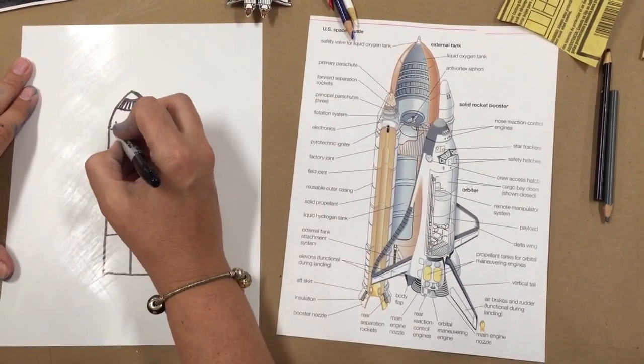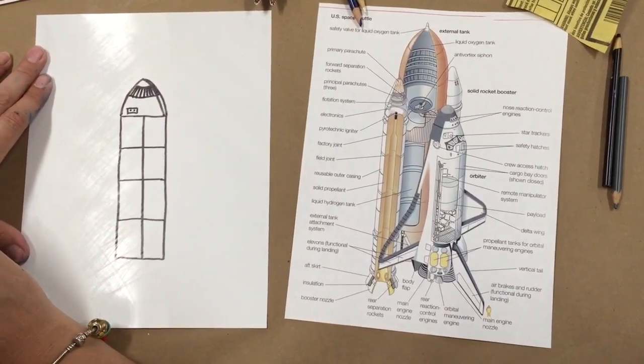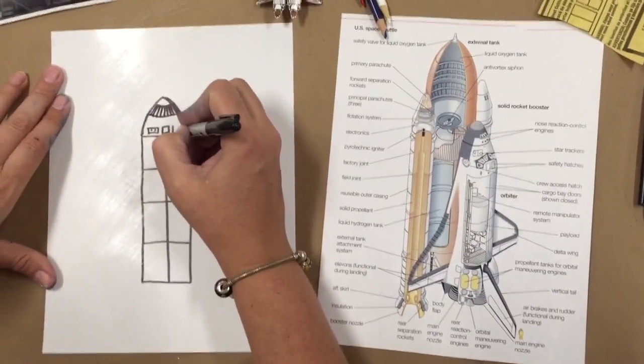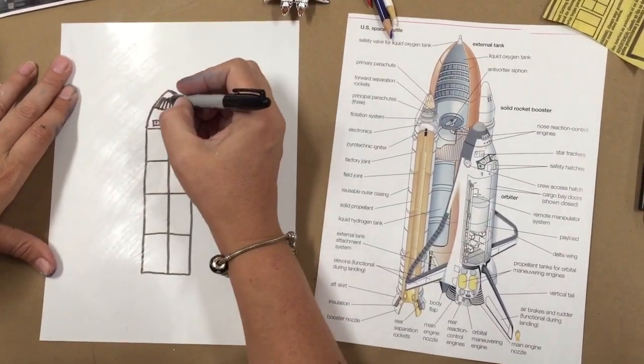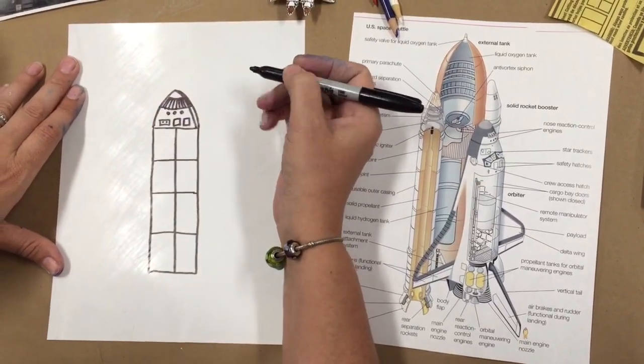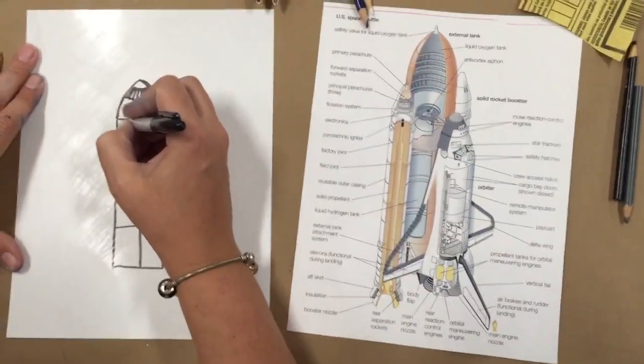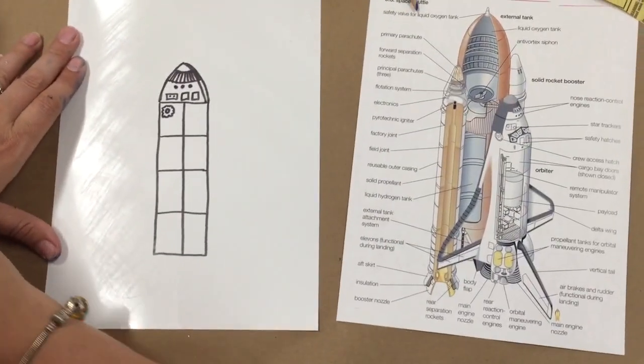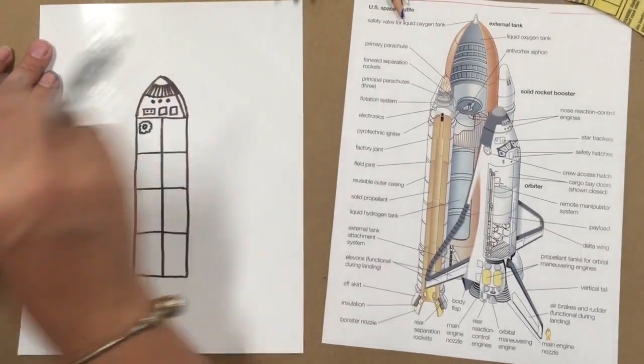There's actually a star tracker right here. So you can put that on there. And there are some safety hatches over here that you can put on here where they can get out if they need to. And then there are a few more engines right here. And the people are actually in the side. They actually access it right here. You can put the access hatch right there. That's how they get inside. So the crew is actually up in the front here.